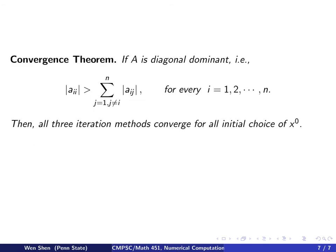We will conclude with the following convergence theorem without proof. The theorem says if A is diagonal dominant—if we remember the definition, that is, the diagonal term is much bigger than the sum of all the rest in absolute value—then one can show that all three iteration methods converge for any initial choice x^0.